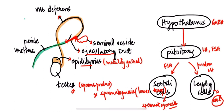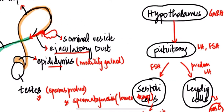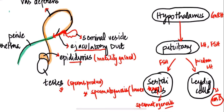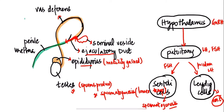In the testis, spermatogenesis occurs. The testis must be located at a lower temperature than the body's core temperature, which is why it is placed in the scrotum. Sperms gain their motility in the epididymis. The vas deferens meets the seminal vesicle to form the ejaculatory duct, continuing into the penile urethra. For normal function, the hypothalamus-pituitary-gonadal axis is essential: GnRH acts on the pituitary to release LH and FSH. FSH acts on Sertoli cells to support spermatogenesis; LH acts on Leydig cells to secrete testosterone.